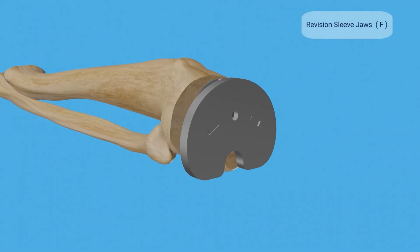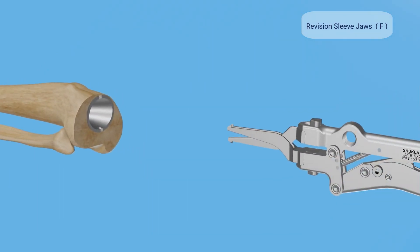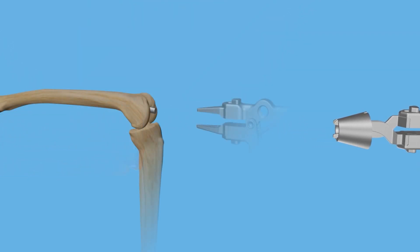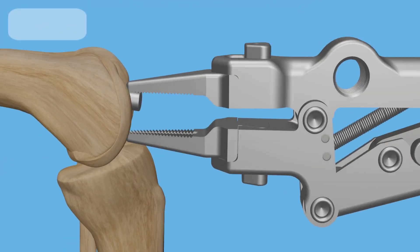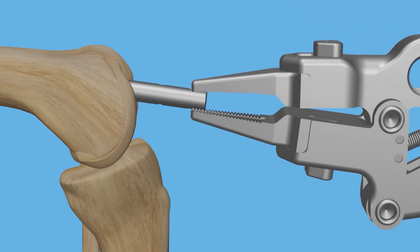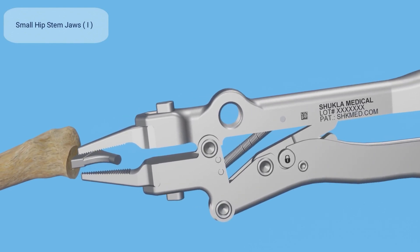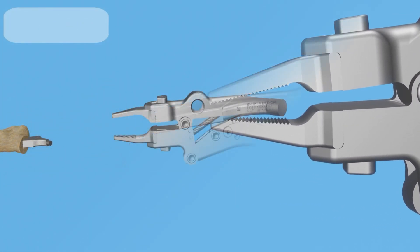The revision sleeve jaw can remove both knee and hip revision sleeves. The IM nail jaws are used for removing IM nail implants. The large and small hip stem jaws are used for hip stems with broken trunnions that cannot be removed using other Shukla hip systems.